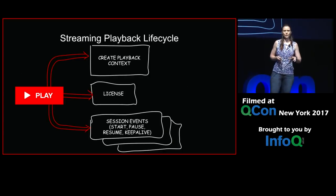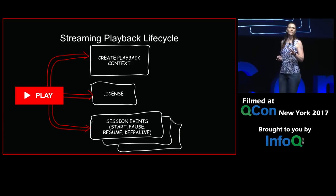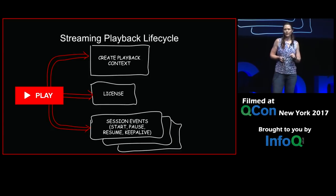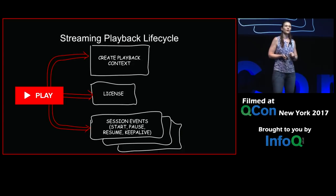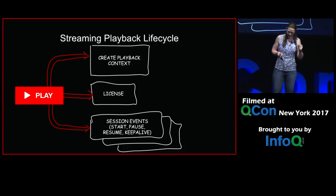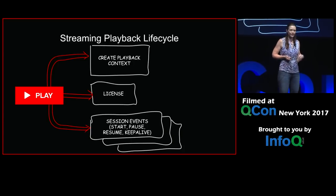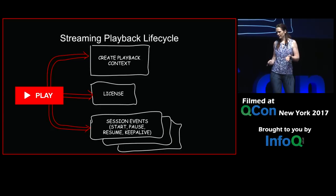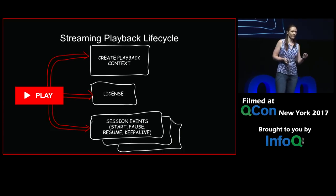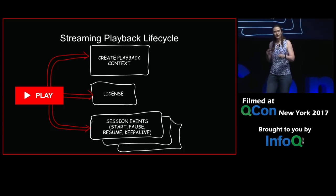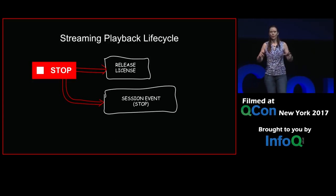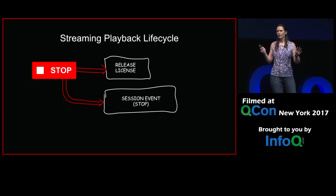I'm going to give you an overview of what the streaming playback life cycle is so we can then compare it to downloads and see how the requirements are different. When you press play on your device and go to stream some content, the first thing you get is a playback context. This gives you the metadata for your playback, the URLs you need for streaming, and information such as the language you're going to be using. After that, you can get the license, which allows you to decrypt the encrypted content. Then, as you play, we generate session events sent up to our server that tell us how the playback experience is going. When you press stop, we get events telling us the license has been closed and that you've closed the session.